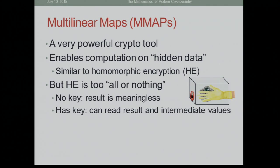The main difference is homomorphic encryption is a very all-or-nothing story. You either have the secret key or you don't. If you don't have the secret key, you can compute as much as you want, but when you're done computing, what you have is a ciphertext that's completely meaningless to you.